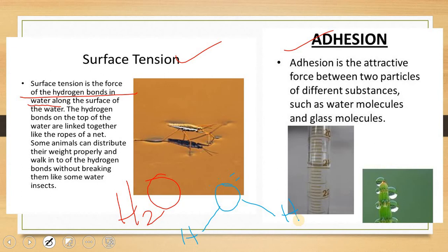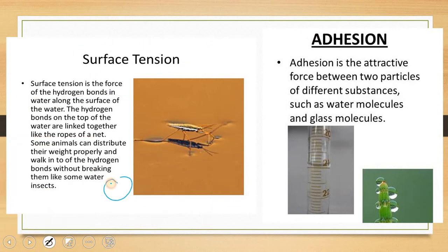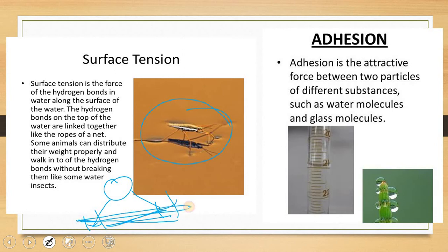When the hydrogen bonds link together, they act like a carpet on the surface of the water — they provide support. So when there is an insect on top of the water, it will not fall in. Instead, it can walk on top of the water because of surface tension. The hydrogen bonds act as support, so the animal can walk on the water surface and will not fall inside.